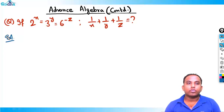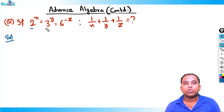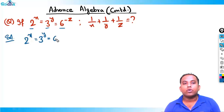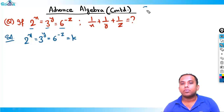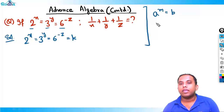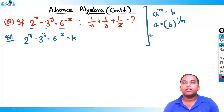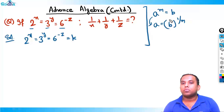We'll learn how to solve this kind of question. We have three terms: 2^x = 3^y = 6^(-z). What we should do first is equate all three to k. The basic rule is: if a raised to m is equal to b, then a is equal to b raised to 1/m — we take the mth root of both sides.